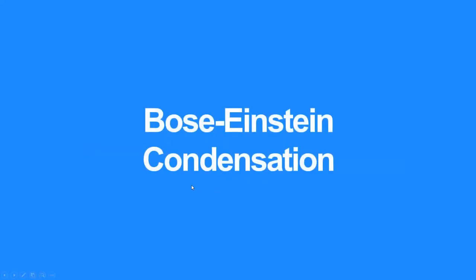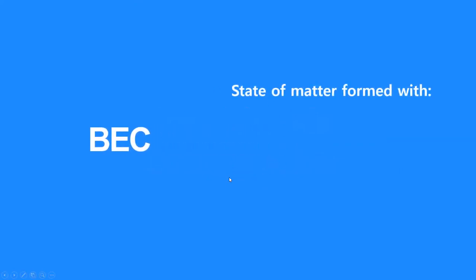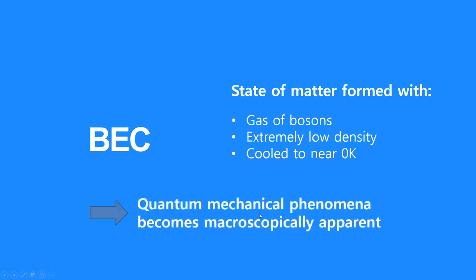Now, let me explain Bose-Einstein condensation, which is often abbreviated as BEC. The definition of BEC is the state of matter formed by cooling down the gas of Bosons with extremely low density to near absolute zero. Here, the gas of Boson have extremely low density, which is 100,000 times less dense than normal air. In BEC, microscopic quantum mechanical phenomena becomes macroscopically apparent. To explain this in more detail, I will use some figures.